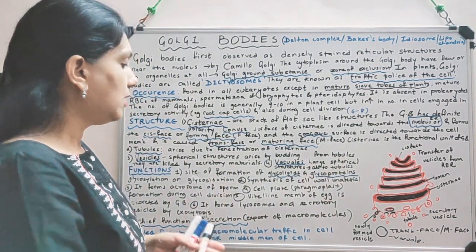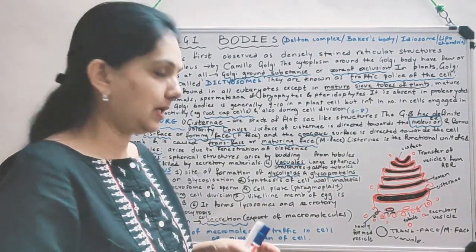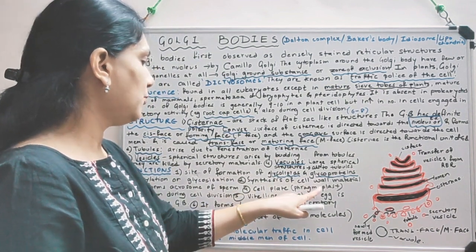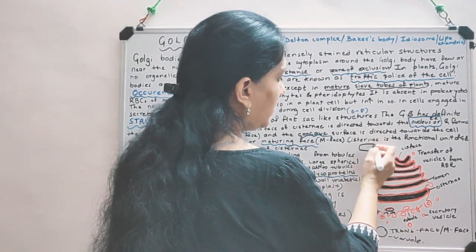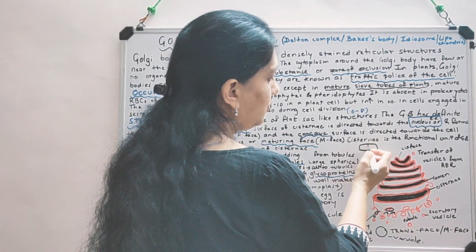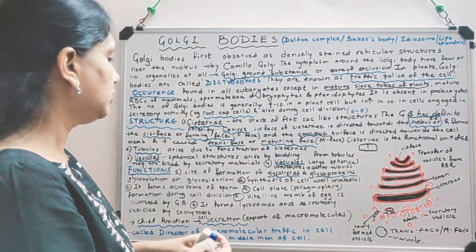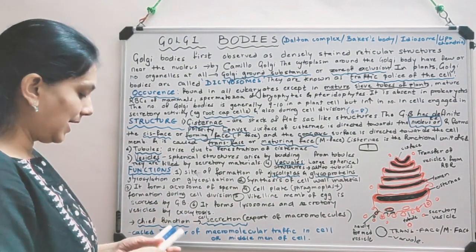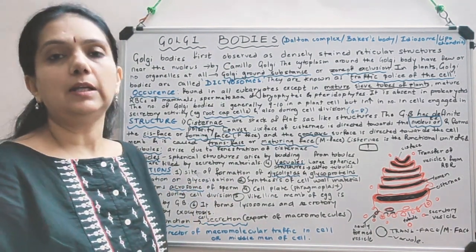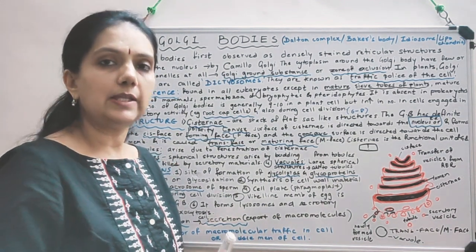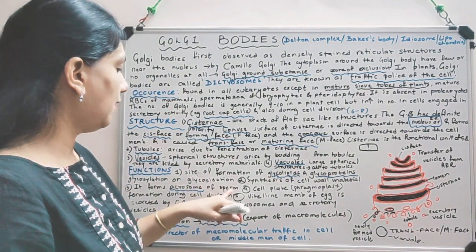Another function is synthesis of cell wall material - it forms polysaccharide for the cell wall. It also makes the cell plate, that is phragmoplast, during the time of cell division - when the cell needs to divide into two, Golgi body makes the phragmoplast. It also forms the acrosome of the sperm. Acrosome is a vesicle found in the head of the sperm containing lytic enzymes, which help in dissolving the membrane of the ovum.